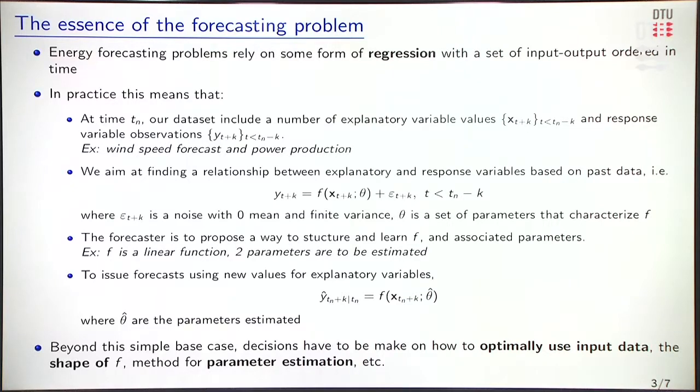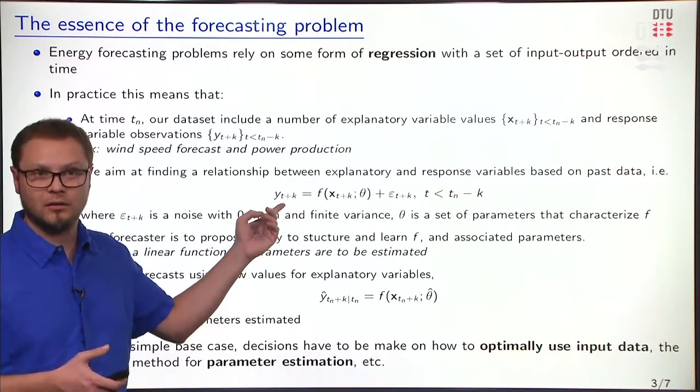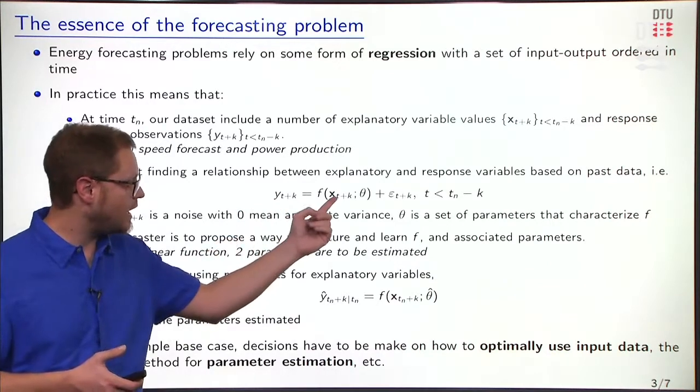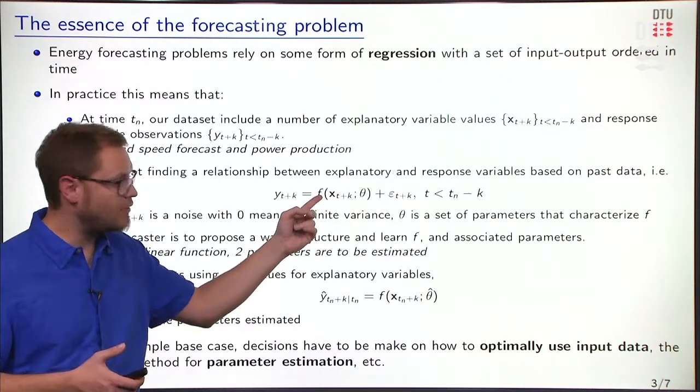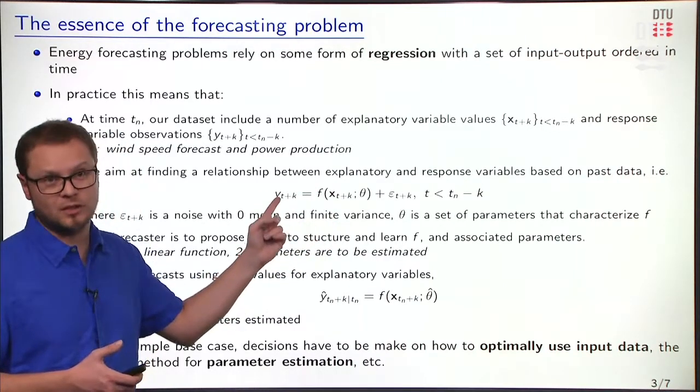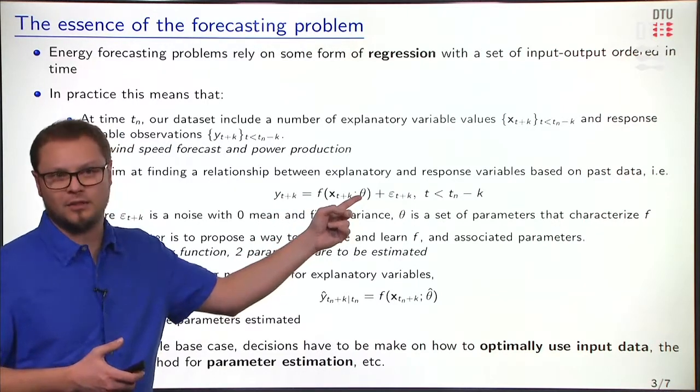Eventually, we aim at finding a relationship between those explanatory and response variables based on the past data. We write it this way, so we have y, our response variable, we have x, our explanatory variable, and we try to find a function f that will model the relationship between the two. And this function f most likely will have a set of parameters θ.